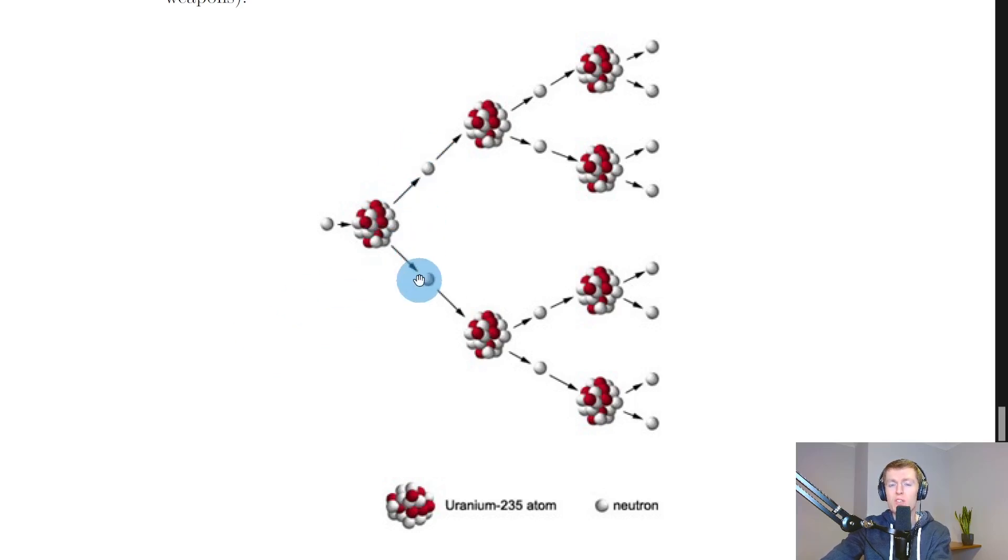So these two neutrons are going on to hit these two other uranium nuclei, which again will split and release more neutrons. And these neutrons can then go on to hit other uranium nuclei, and the cycle and process just repeats.